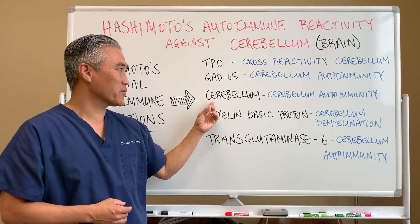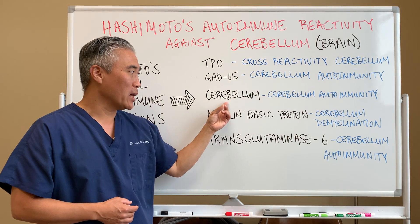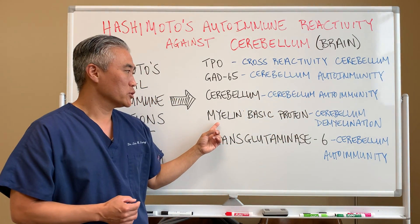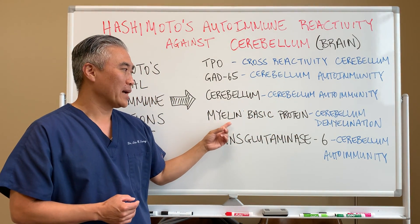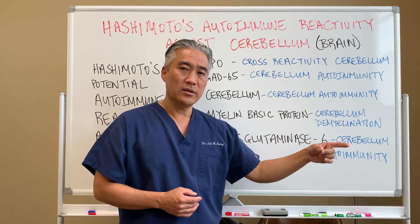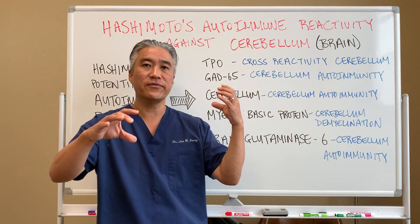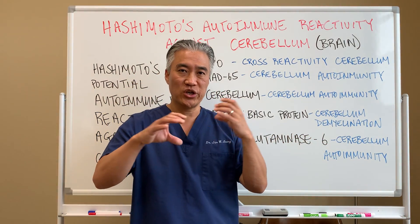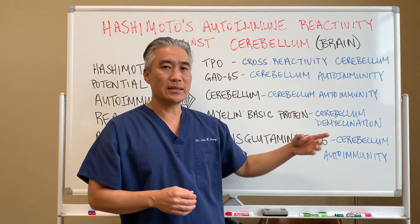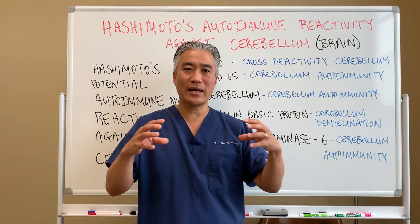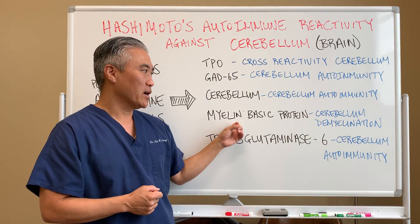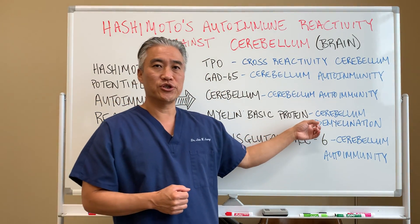You can also check for cerebellum antibodies directly, and you can also test something called myelin basic protein. Myelin is something that covers the nerve — it's the sheath — and you can have demyelination, or breakdown of that sheath, which can then lead to cerebellar issues.